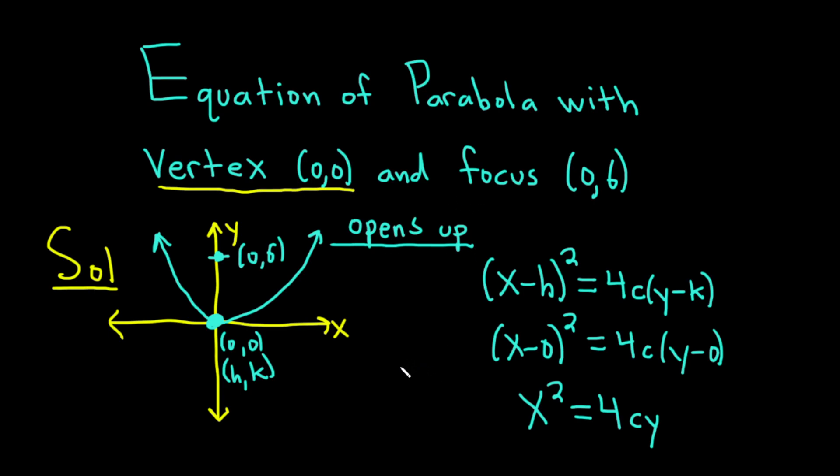And so now we just need to find c. So in the picture, you see the distance between the focus and the vertex. That distance is the absolute value of c. You can see here that that distance is 6. So the absolute value of c is equal to 6. Now, c could be positive or negative. Because it opens up, c is positive. If it opens down, then c is negative.